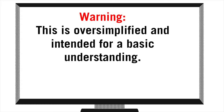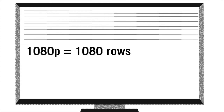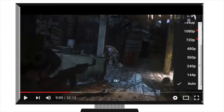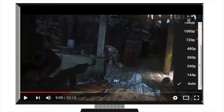So right now, people throw around the term HD — high definition. This is most often a resolution called 1080p. In a 1080 display, there are 1080 rows in the image. When you see smaller numbers, like on YouTube when you can select 240 or 720, this means there are less lines, which means less clarity. A 240 video looks blurry because there are less lines of color.